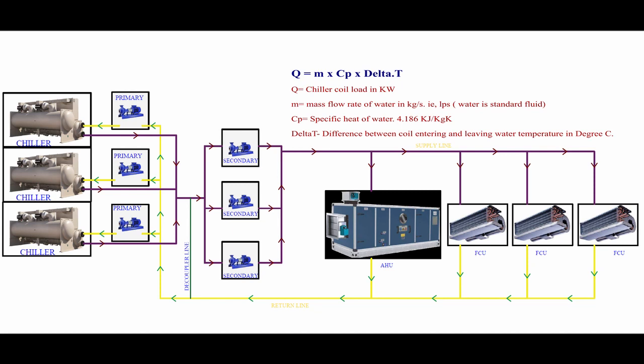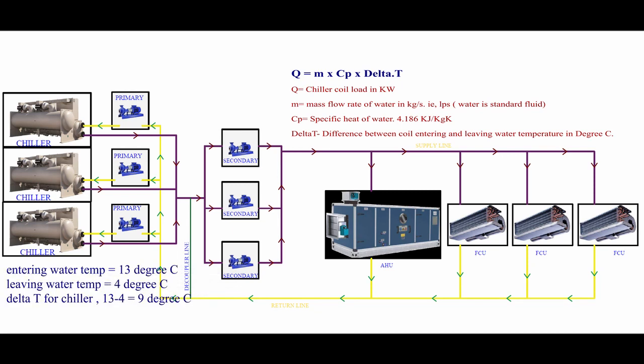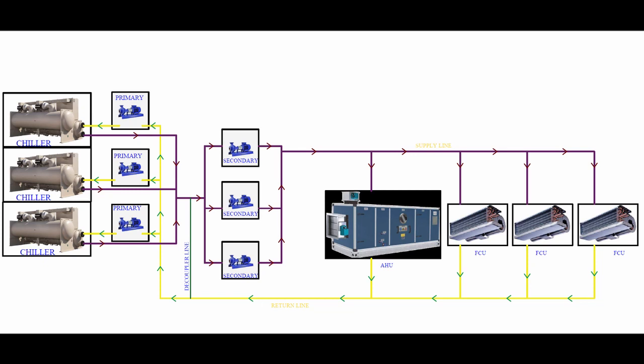Cp is a constant coefficient called the specific heat of water. The value is 4.186 kilojoule per kilogram Kelvin. Delta T is the difference between chiller entering water temperature and chiller leaving water temperature in degree Celsius. Here I am considering entering water temperature as 13°C and leaving water temperature as 4°C, so the delta T of the chiller is 9°C. By the calculation, I will get the mass flow rate of water as around 18.66 kilogram per second.